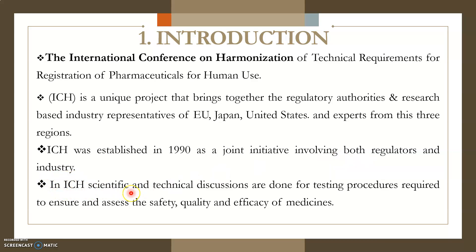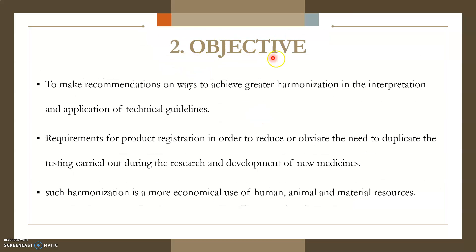In ICH, scientific and technical discussions are done on the basis of testing procedures and requirements for ensuring access to safety, quality, and efficiency of all medicines. Point number two is objectives. ICH has made recommendations on different ways to achieve greater harmonization in the interpretation as well as the application of technical guidelines, in order to increase the international harmonization of technical requirements for ensuring the safety, effectiveness, and high-quality medicines.